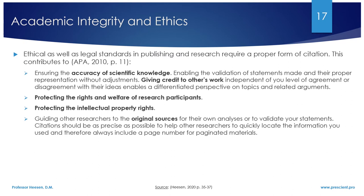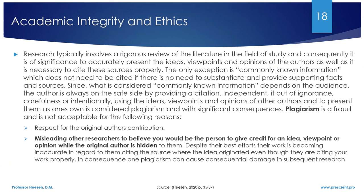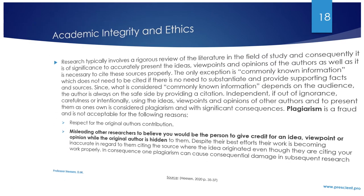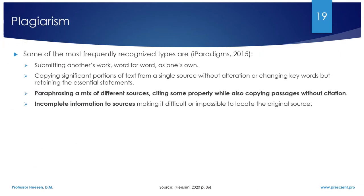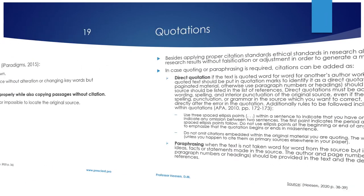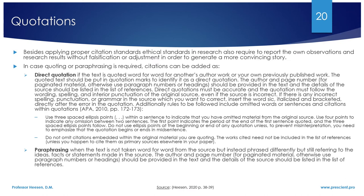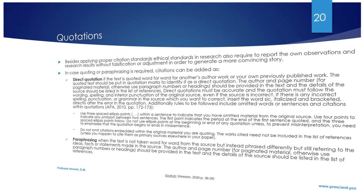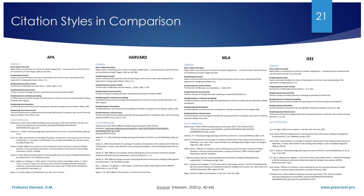Not citing sources adequately would mislead others to believe you are the person that should be given credit for an idea. This is called plagiarism and a violation of academic integrity. Plagiarism can appear in different forms, and it is your task as the author to avoid it. Quotations of sources can be direct — word for word as the original source — or paraphrasing, using content from a source but phrased in your own words. Citations appear differently based on the citation standard; I focus on the APA standard in the following.